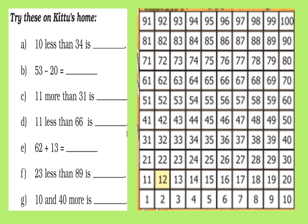Now let us try these on Kitu's home. 10 less than 34 — 'less than' means to subtract, so we jump one row down. Look at the number 34; jumping one row down we reach 24. For 53 minus 20, look at 53 and jump two rows down to reach 33. For 11 more than 31, look at 31, jump one row above, then move one step to the right — we reach 42.